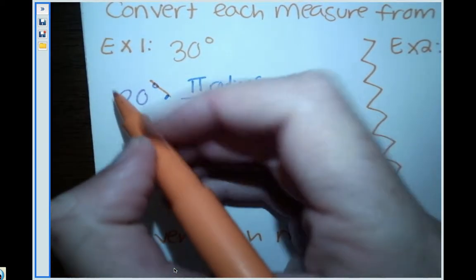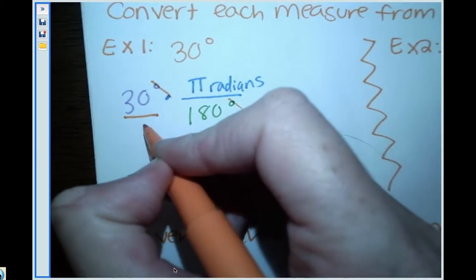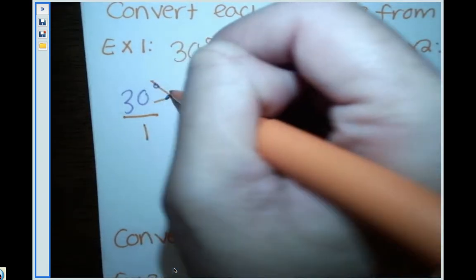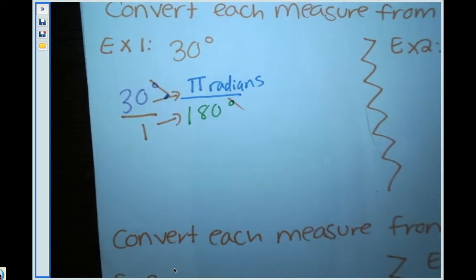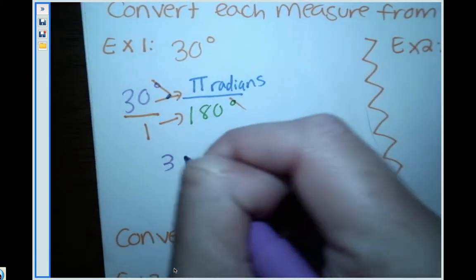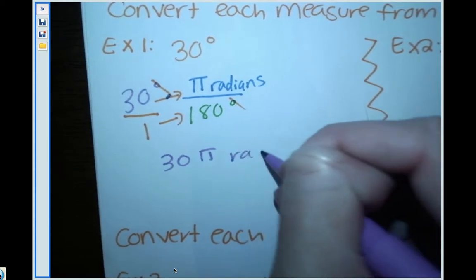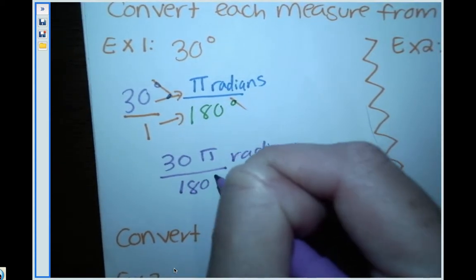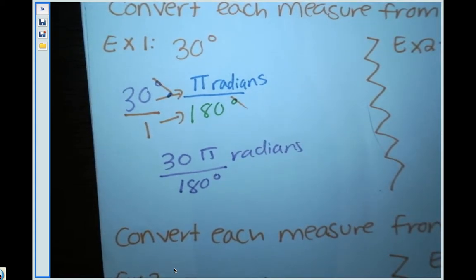The way that we multiply fractions is to go straight across. So let's get going. This is going to be 30π radians over 180. Oh sorry, not degrees - we canceled out degrees. Sorry guys, no degrees. From here we just need to simplify this down.